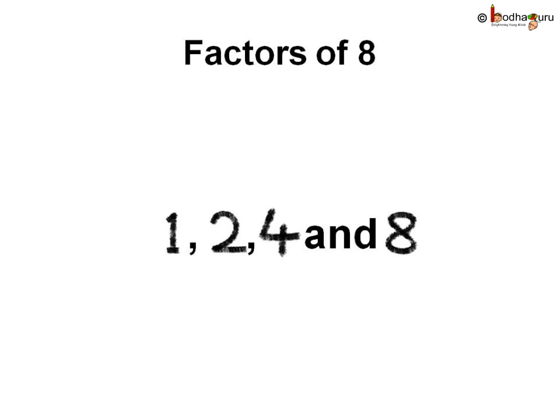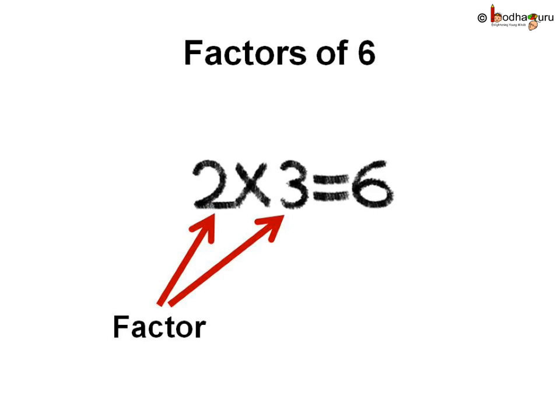So we saw factors help in arranging things in different ways. Actually, factors are the numbers which you can multiply together to get another number. Like, we multiply 2 and 3 to get 6 — here, 2 and 3 are the factors of 6.